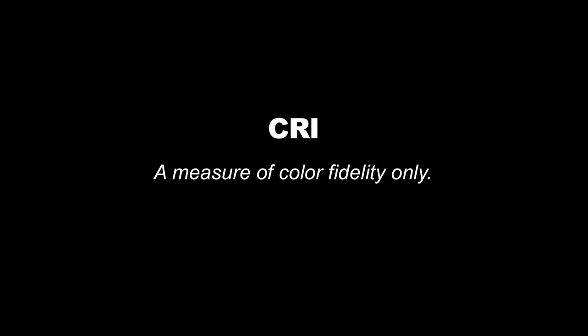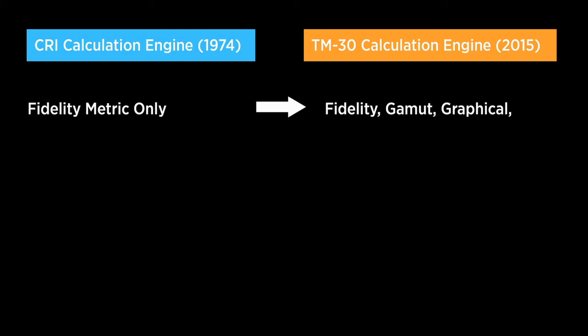At its most basic, CRI is a measure of color fidelity — how similar a light source renders colors compared to a reference. It only tells us the similarity or the magnitude of the difference; it doesn't tell us how the colors are varying. So with TM30, we get a whole bunch of additional information. Not only do we learn about fidelity, but we learn about gamut, which is essentially the saturation or how those colors are becoming more or less saturated. And we can have graphical outputs that tell us how individual colors or hue ranges are varying compared to the reference.